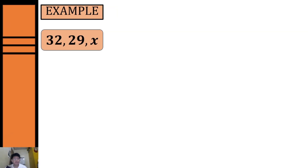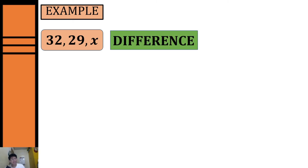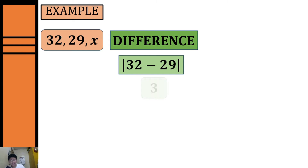Let's have another example. We're given 32 and 29 as the dimensions of our first and second side, and we need to identify the possible measurement of our third side. First, we get the positive difference: the absolute value of 32 minus 29 equals three.